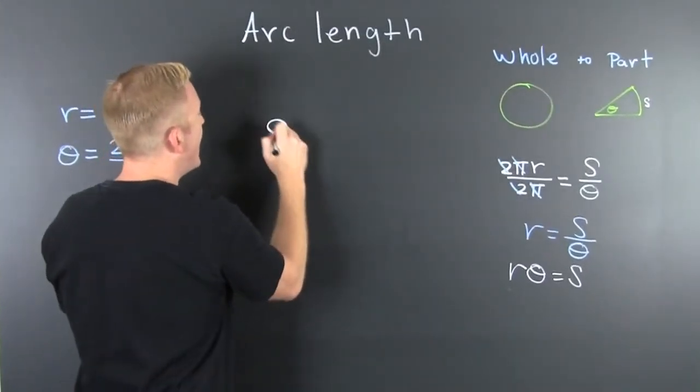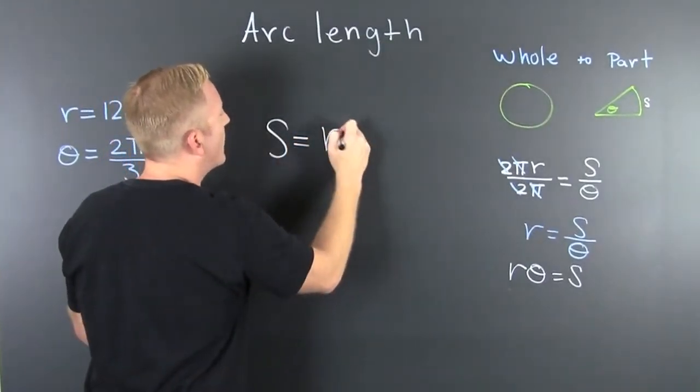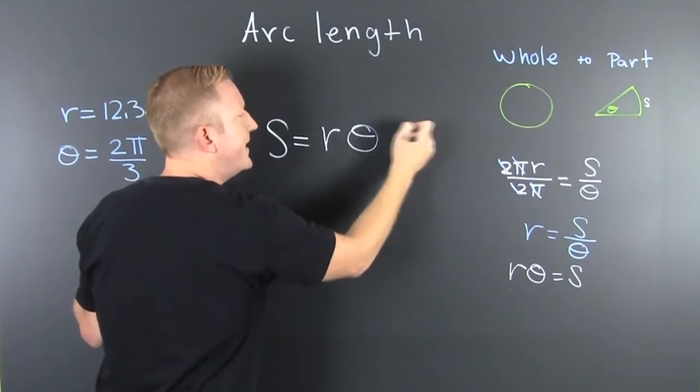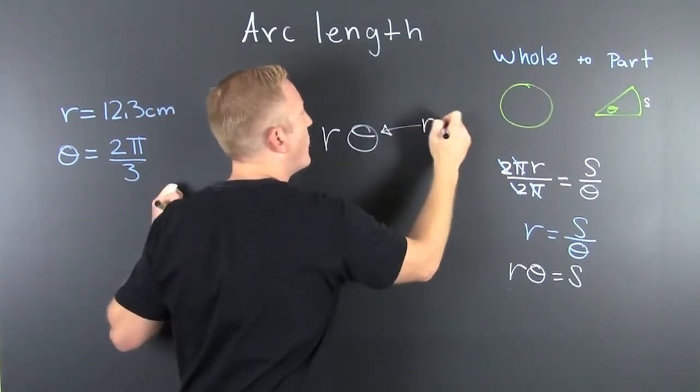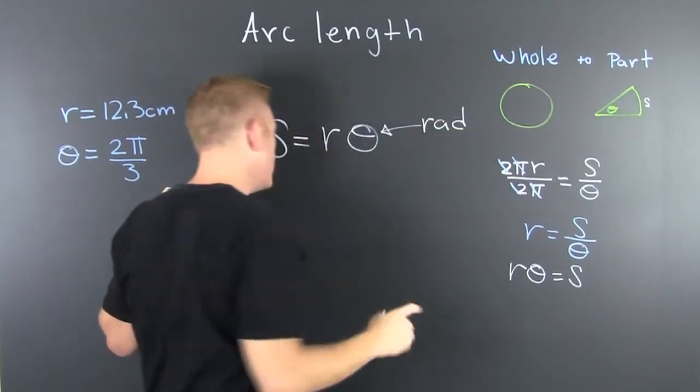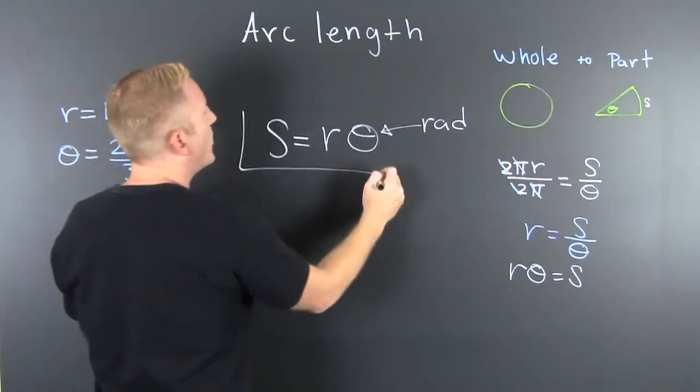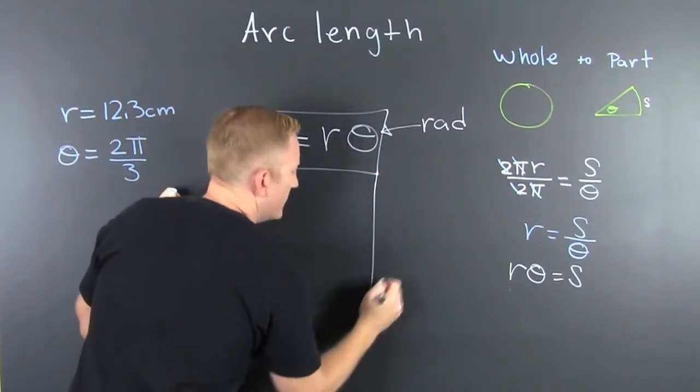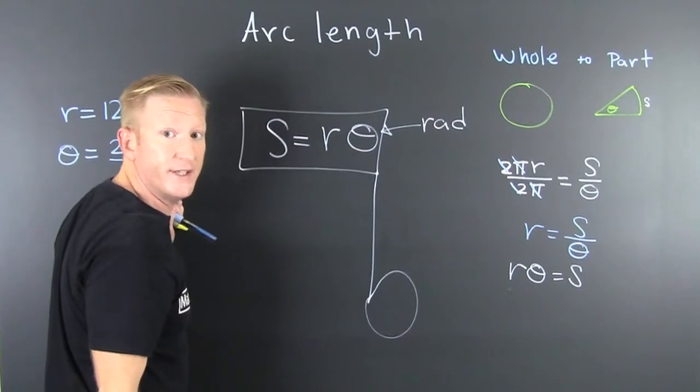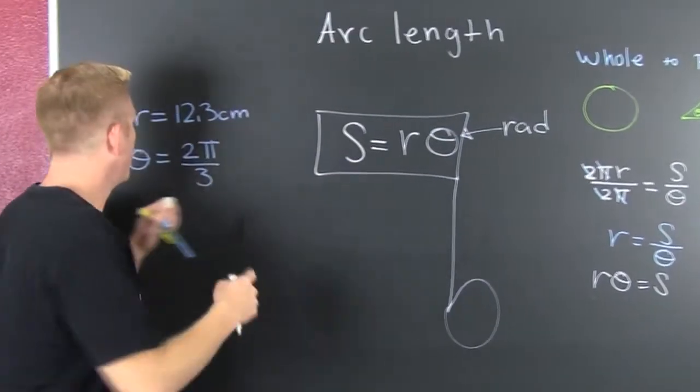What do we have? We have S is equal to R theta, where theta is in radians. Red. And what? You may want to make a note of this because it's going to help us with this.